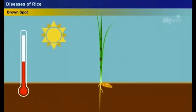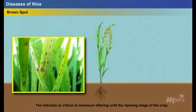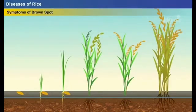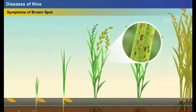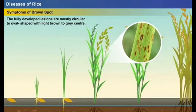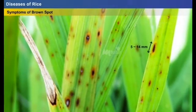The incidence of brown spot is more in places with temperature ranging between 16 and 36 degrees Celsius and relative humidity of 86 to 100 percent. The infection is critical from maximum tillering until the ripening stage. Symptoms: at the seedling stage, circular yellow or brown lesions appear on the coleoptile. At the tillering stage, initially small circular brown to purple-brown lesions appear on leaves. The fully developed lesions are mostly circular to oval-shaped with a light brown to gray center surrounded by a reddish-brown margin.